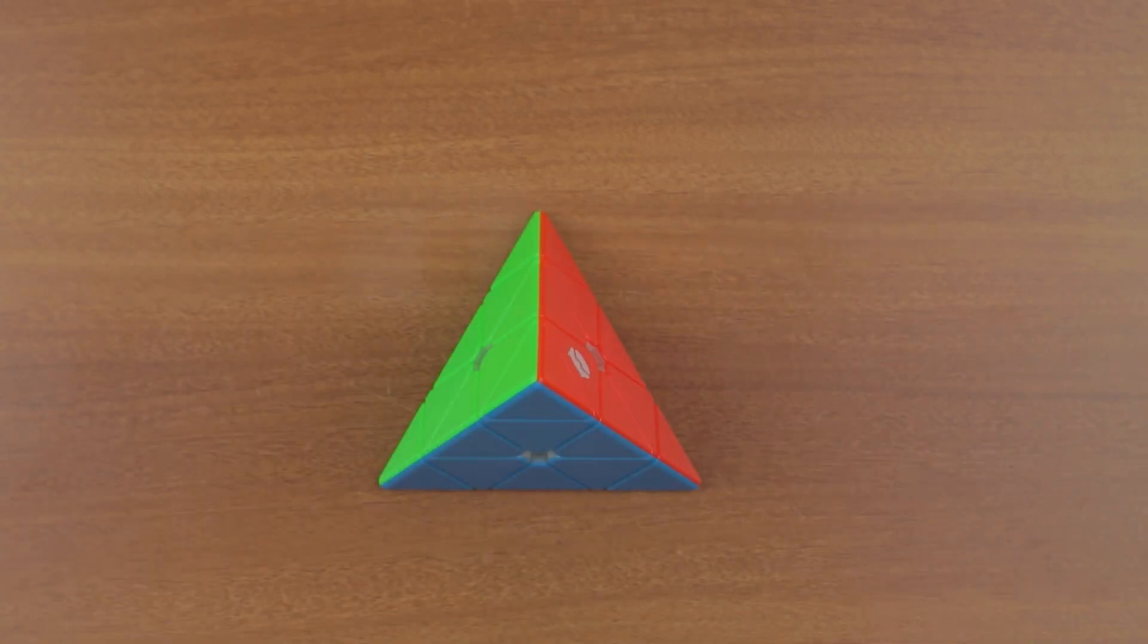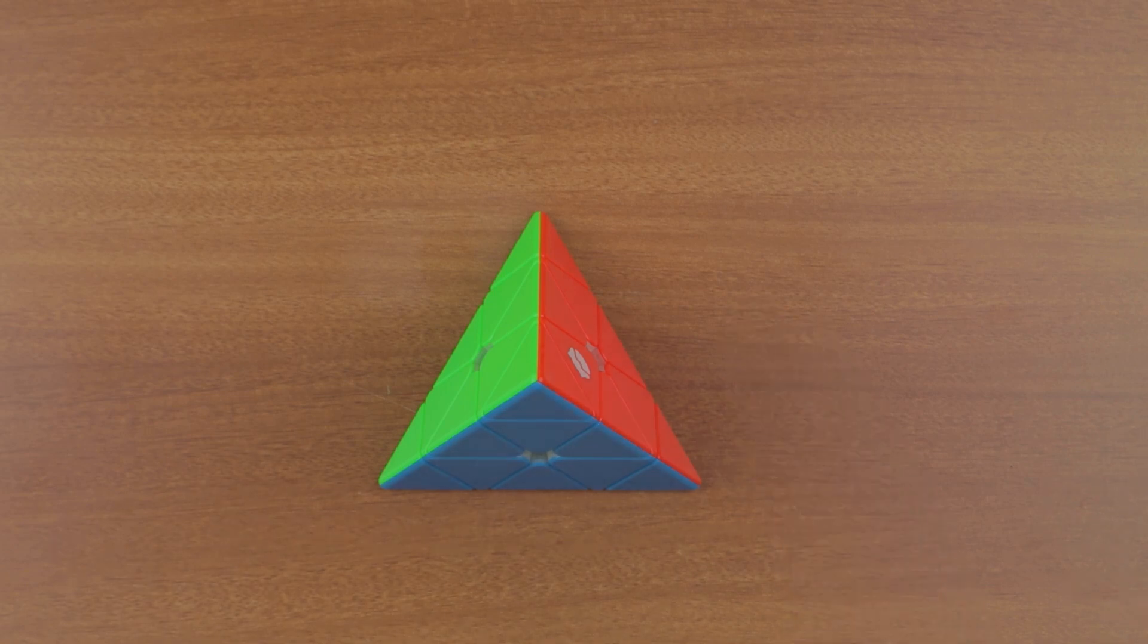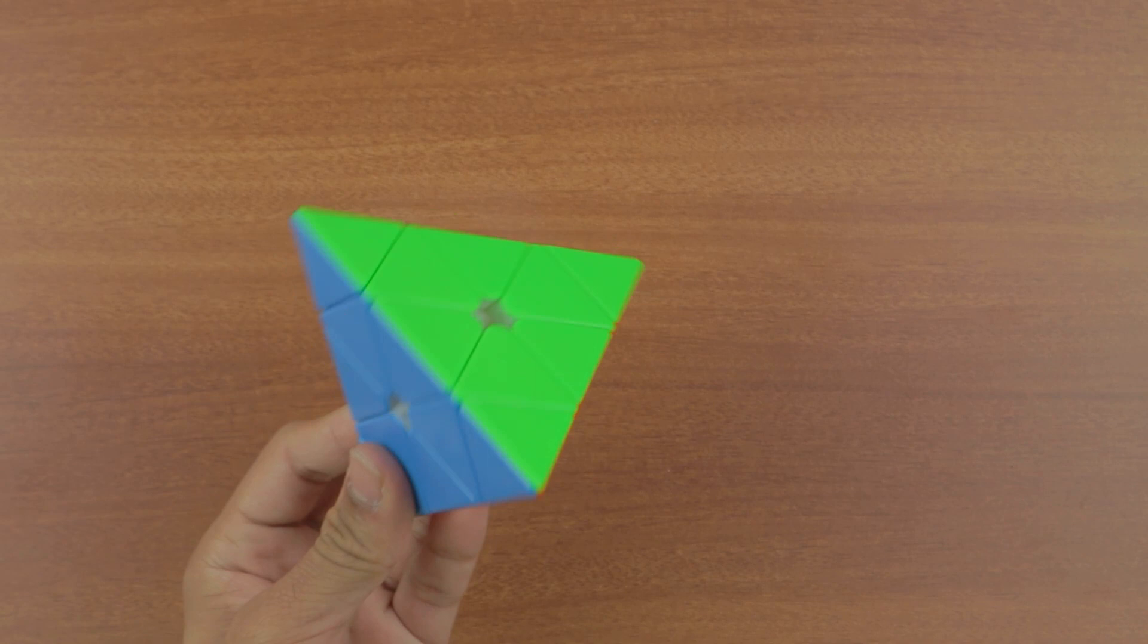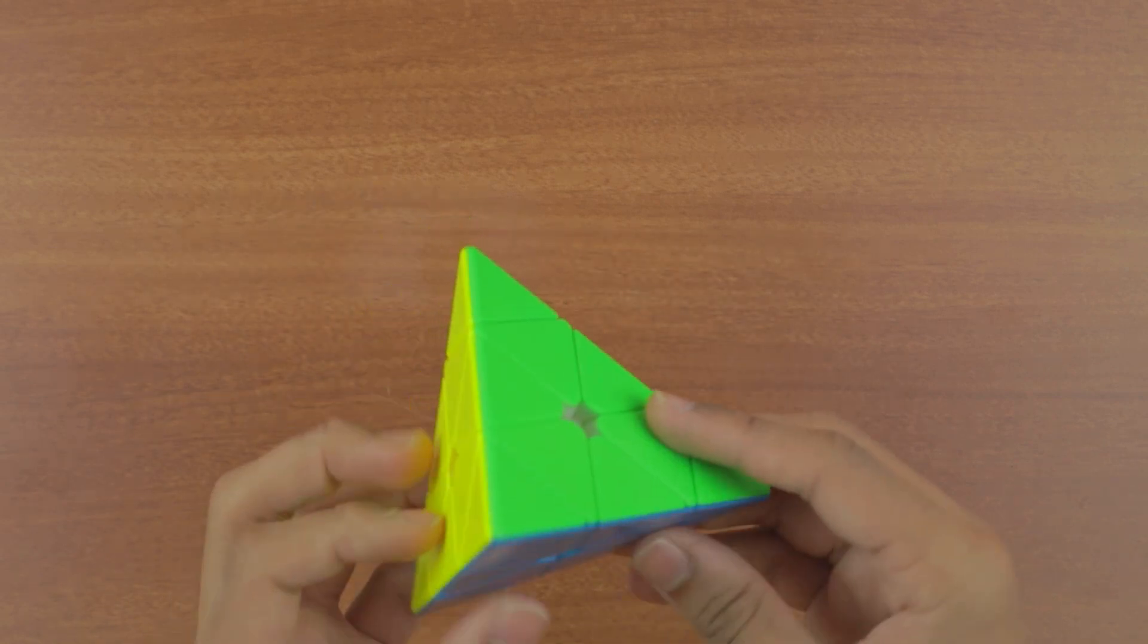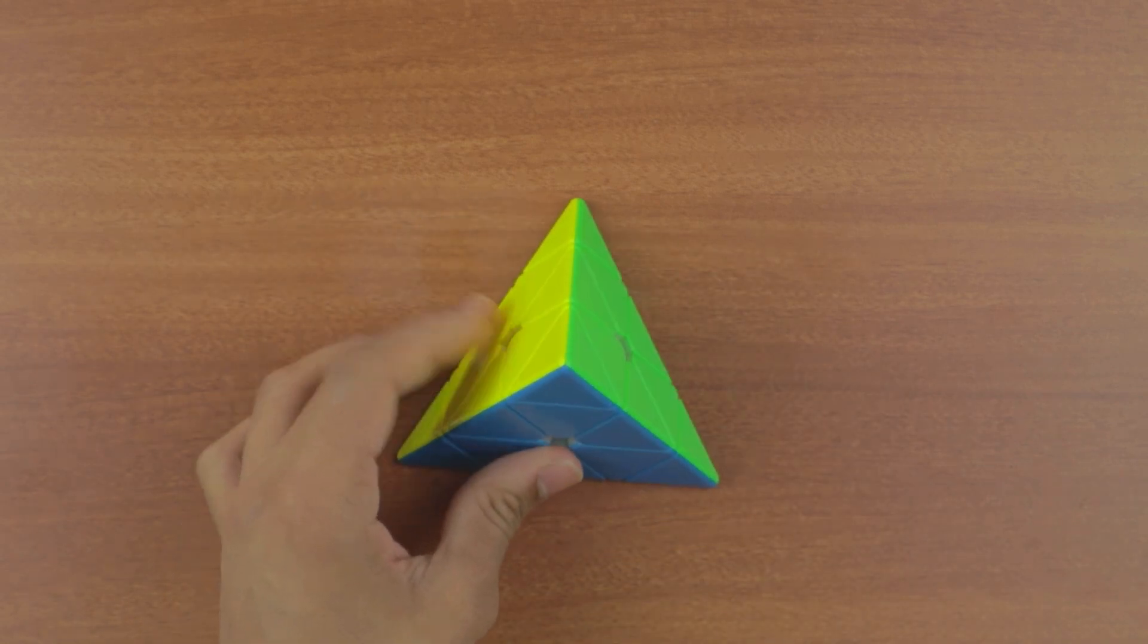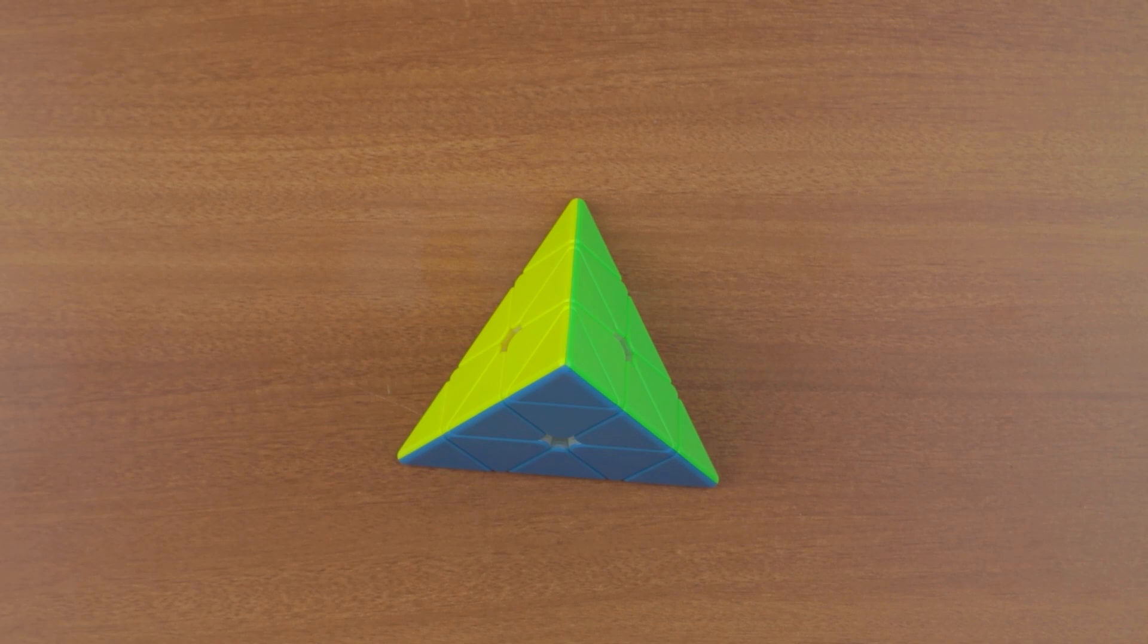So yeah, that's it for this unboxing. It has reasonable stickerless shades and also comes at a cheaper price, so it definitely looks like the option to go if you want a somewhat cheaper version of the GAN Pyraminx. Out of the box, the tensions are pretty good on it and it overall seems to be performing pretty well. The only thing about it is that it has pretty light magnets, at least for my taste. I'm someone who prefers magnet strengths coming close to the X-Man Bell version 1. So yeah, let's cut to some solves.